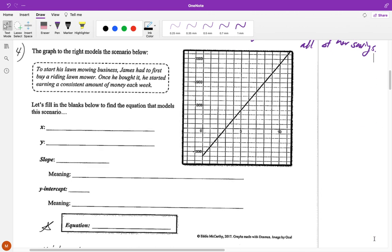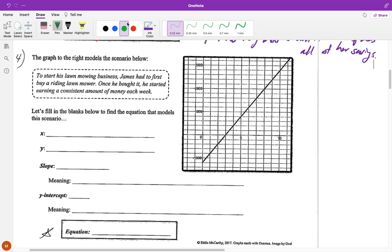All right, so let's move on to the next question. It's the same thing. So from here, it says to start his lawnmower business, James had to first buy a riding lawnmower. Once he bought it, he started earning consistent amount of money each week. So we can then say number of weeks and here we can say money earned. So our X, to define it, would be number of weeks worked. And for Y, we can say total amount of money earned or profit maybe that you would say as well. If you just said profit, that one word actually could get it all.